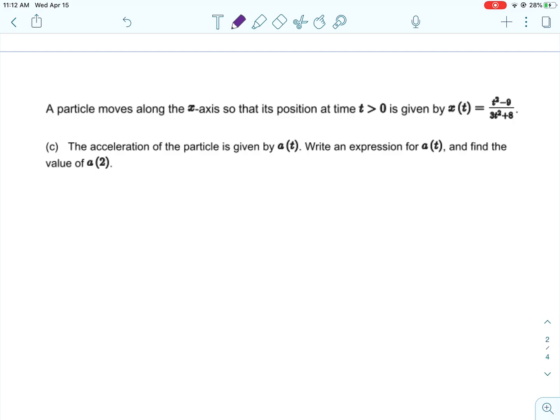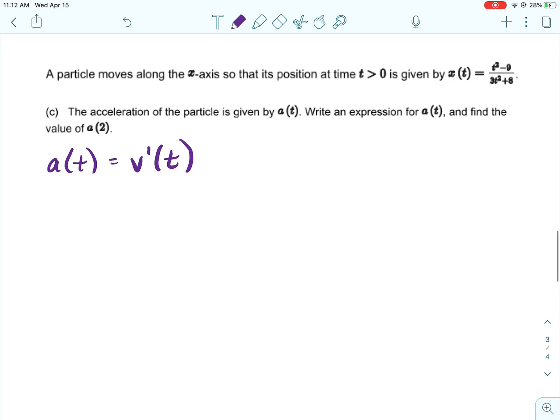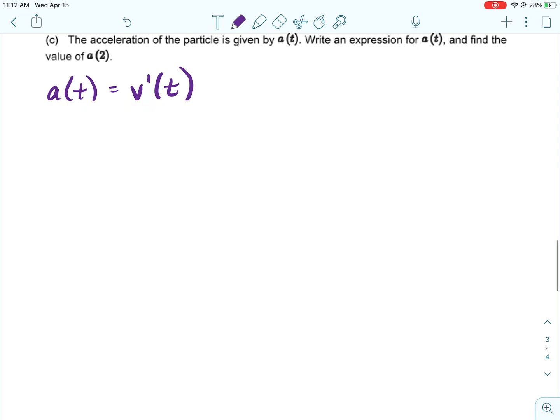I kind of like that question. Alright, and then part c asks us about the acceleration. So the acceleration of the particle is given by a of t. We're going to write an expression for a of t and we're going to find the value of a of 2.